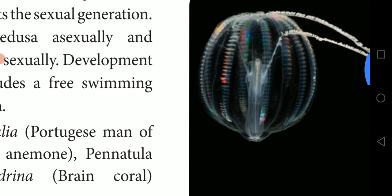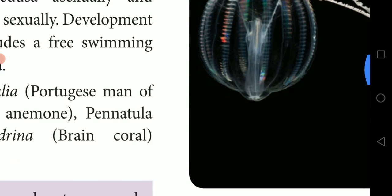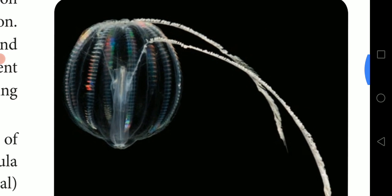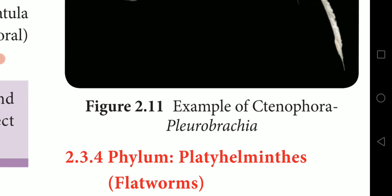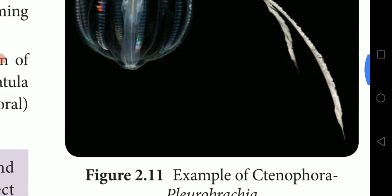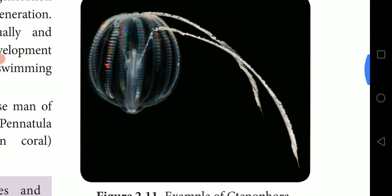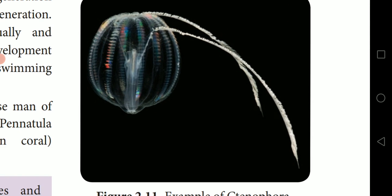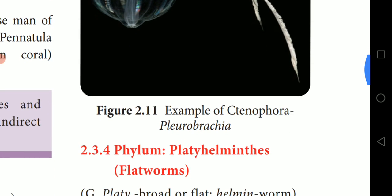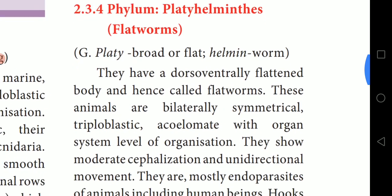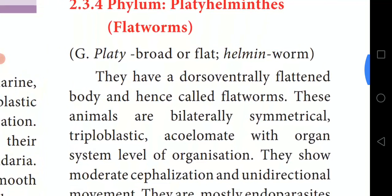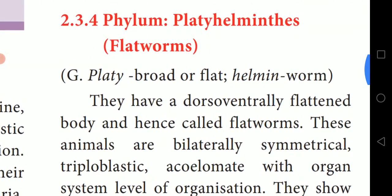The example of Ctenophora is Pleurobrachia. This picture can be found in your textbook. These are the characteristic features of Phylum Ctenophora. The next topic is Phylum Platyhelminthes.